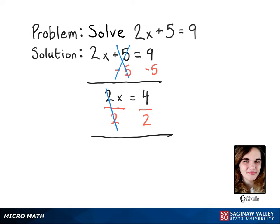With the 2 canceled, we now have x by itself. And what's left on the other side is 4 divided by 2, which is 2. So the solution to this equation is 2.